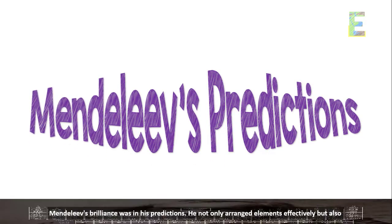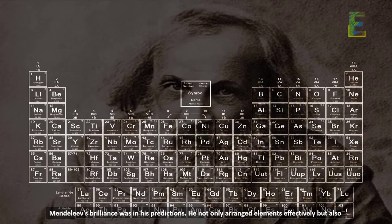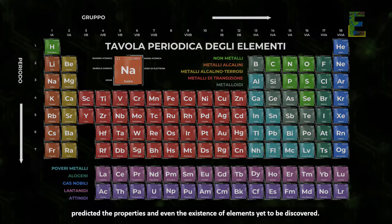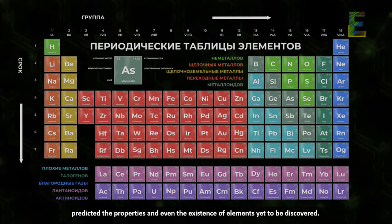Mendeleev's predictions. Mendeleev's brilliance was in his predictions. He not only arranged elements effectively but also predicted the properties of elements yet to be discovered.